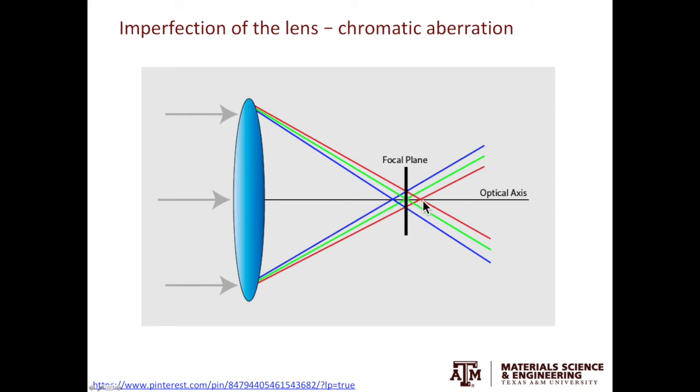In TEM, when the electron beam leaves the electron source, there is an energy spread and that leads to the chromatic aberration. The lack of the ability to focus all the beam to a single point leads to the smearing of the image. If you recall one of the previous videos, the energy spread from the electron source is the temporal coherency of the electron source.